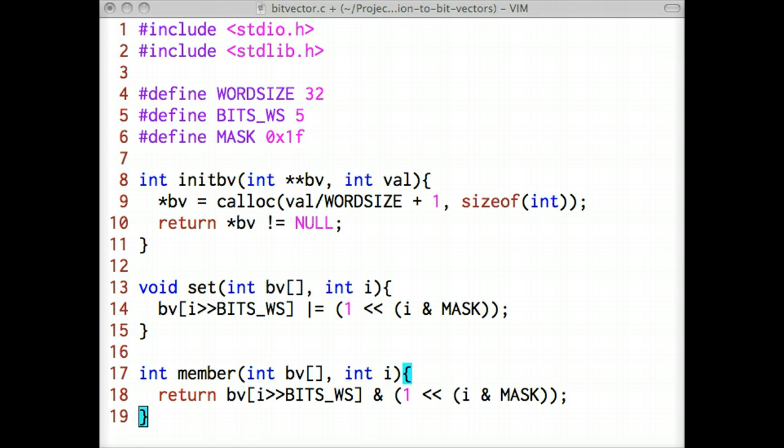In the last step, we'll iterate through the integers in the second set. If an integer is a member of the bit vector, we'll print it out. With this algorithm, we'll print out the integers that are in both sets - in other words, the intersection of the two sets. Let's code it.